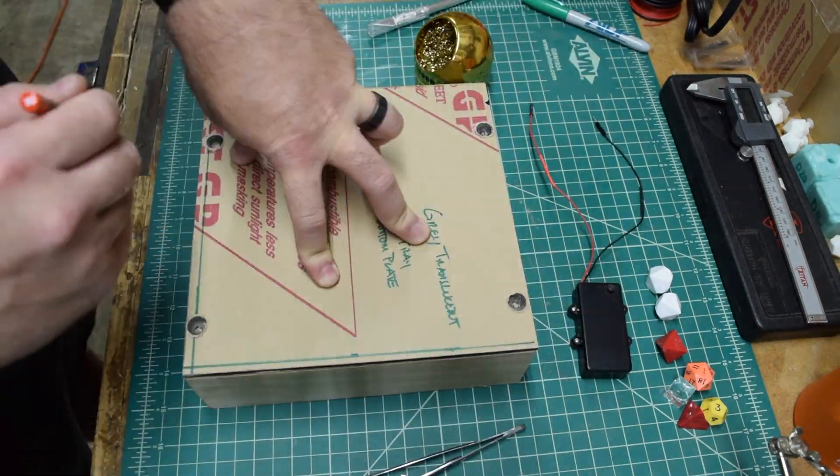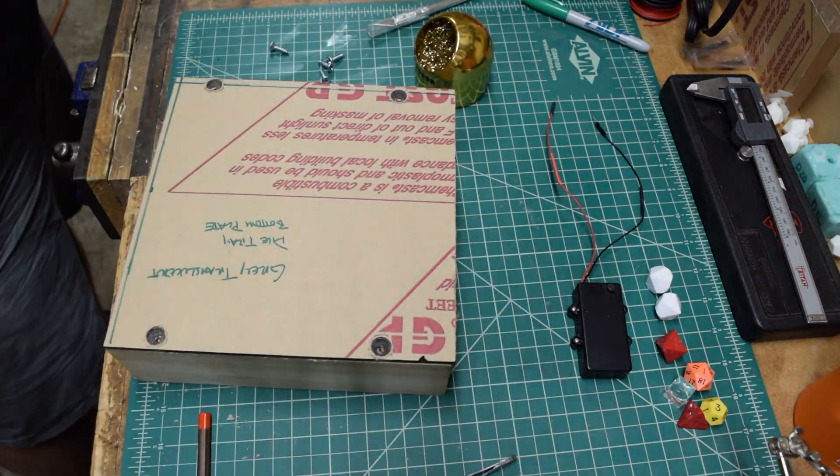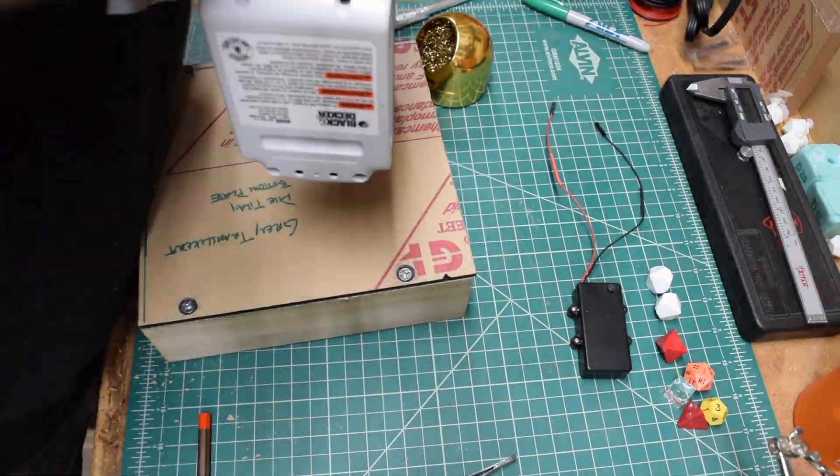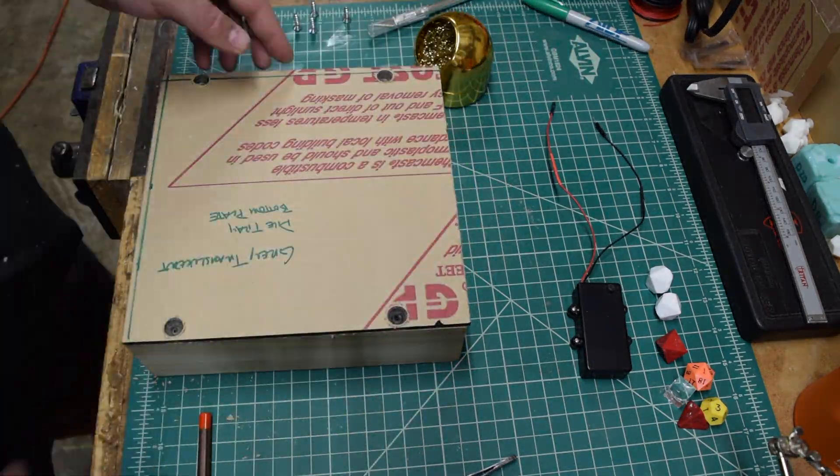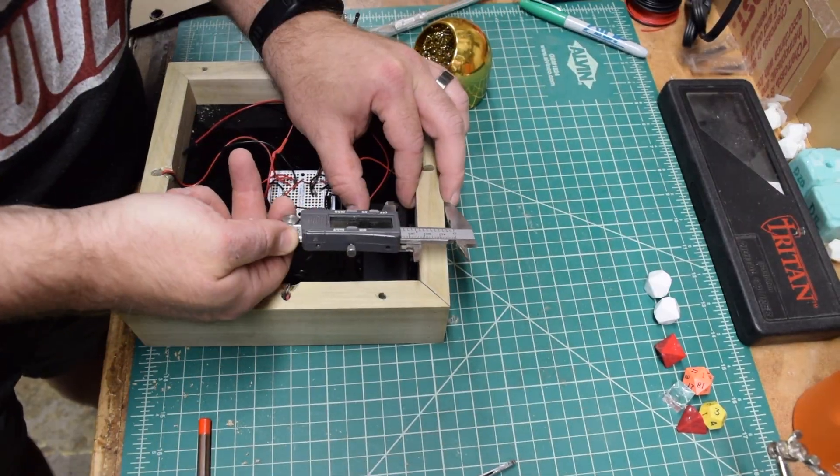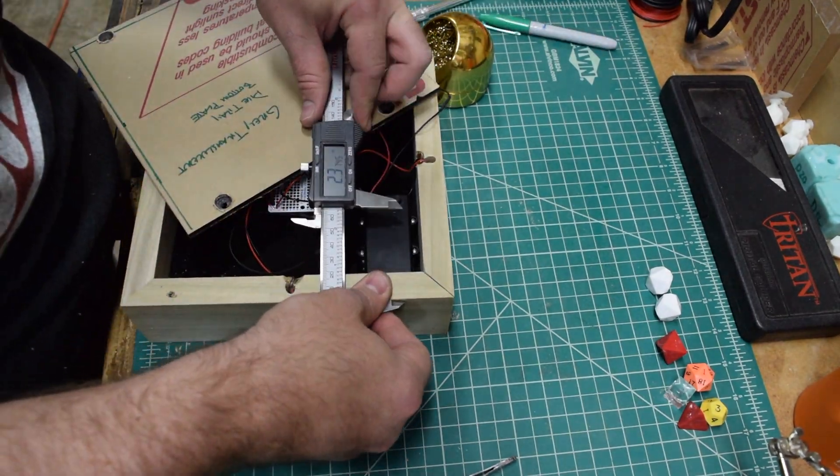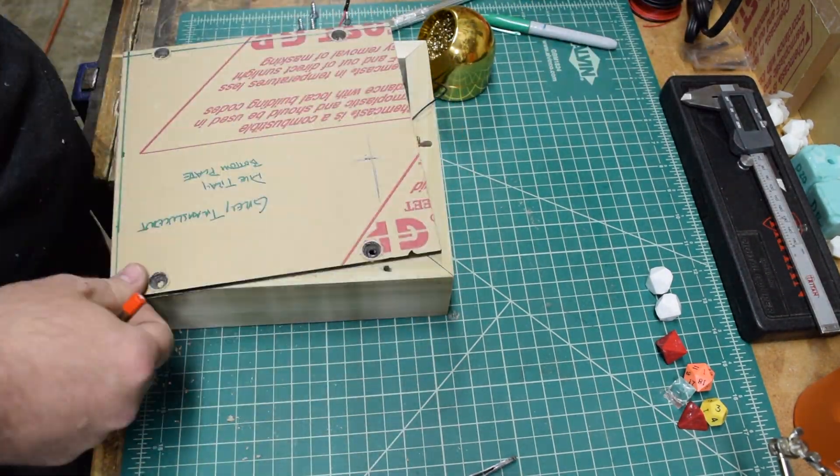The Lexan was cut to the outside dimension of the box and holes drilled and countersunk for wood screws. With the screw holes drilled, I measured the placement of the battery pack switch. With a Forstner bit, I drilled out an access hole.